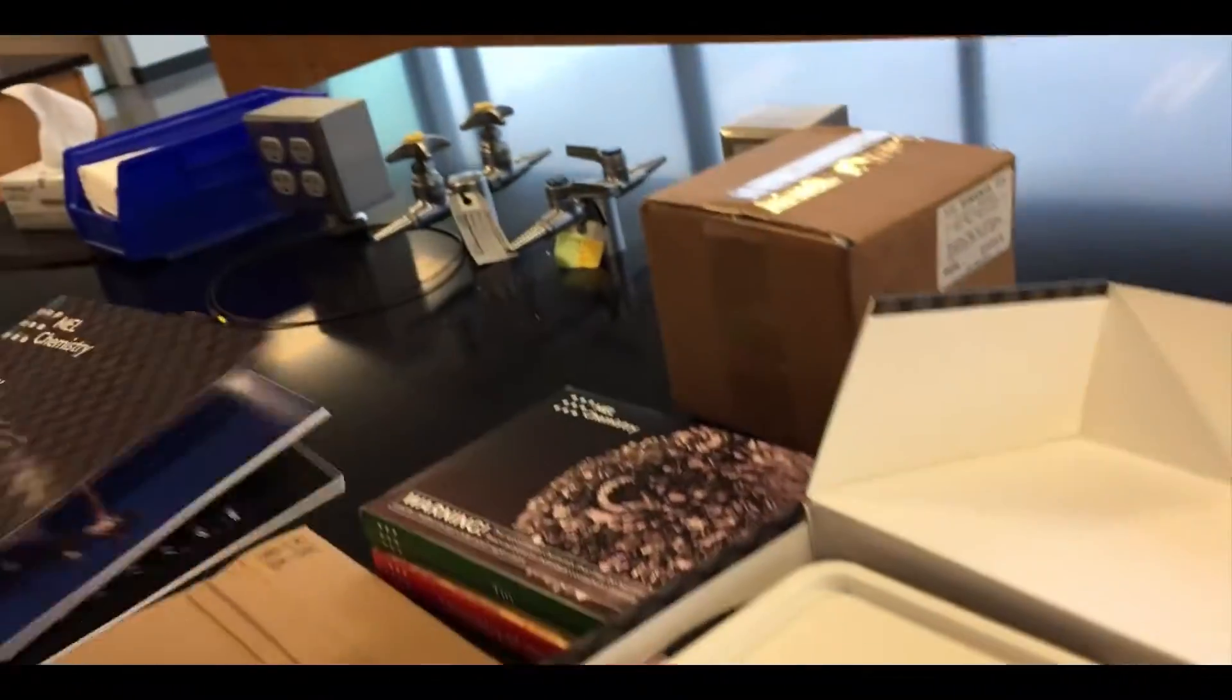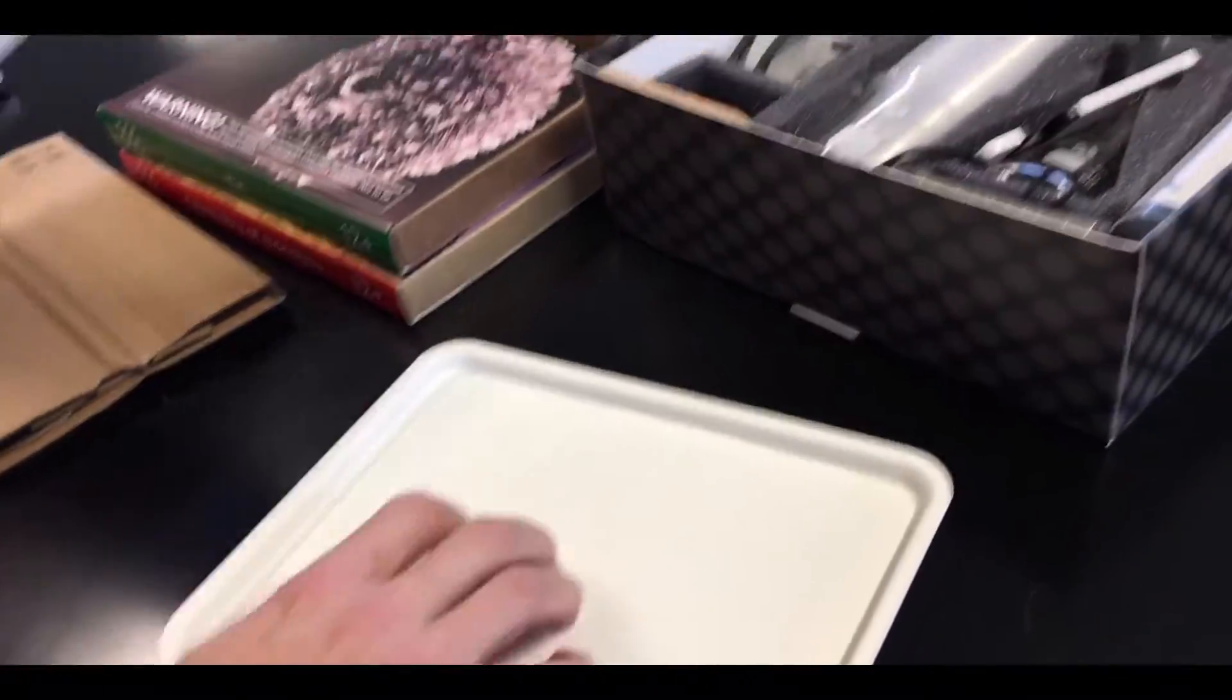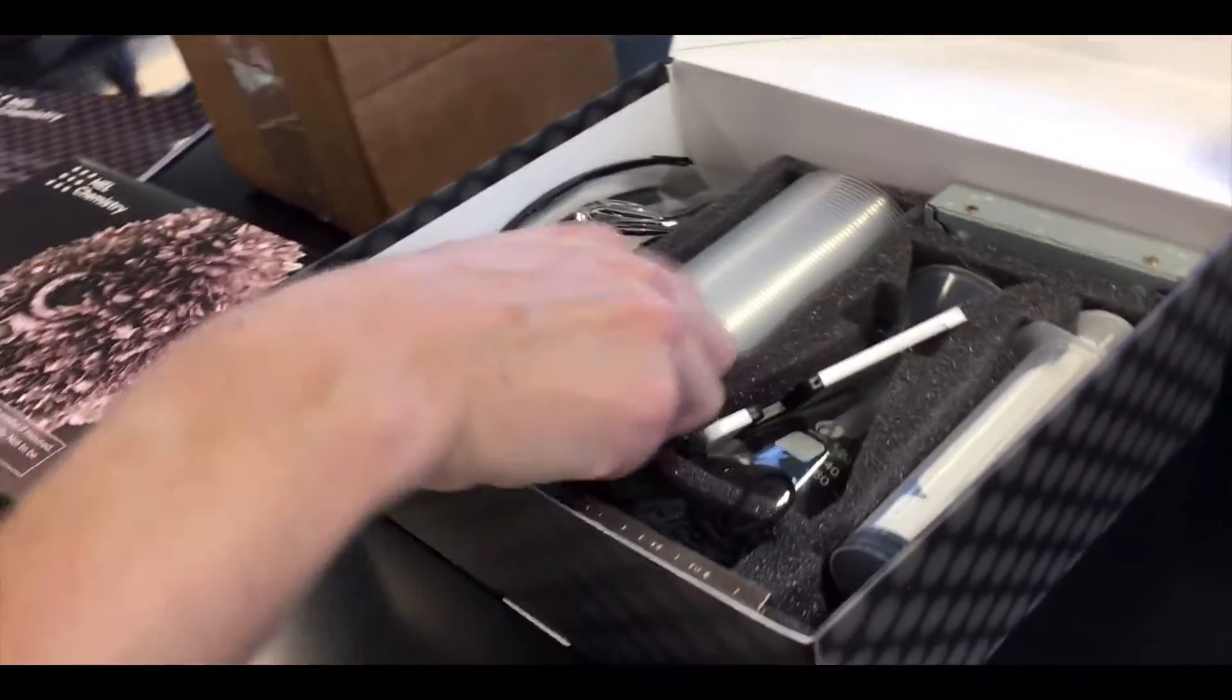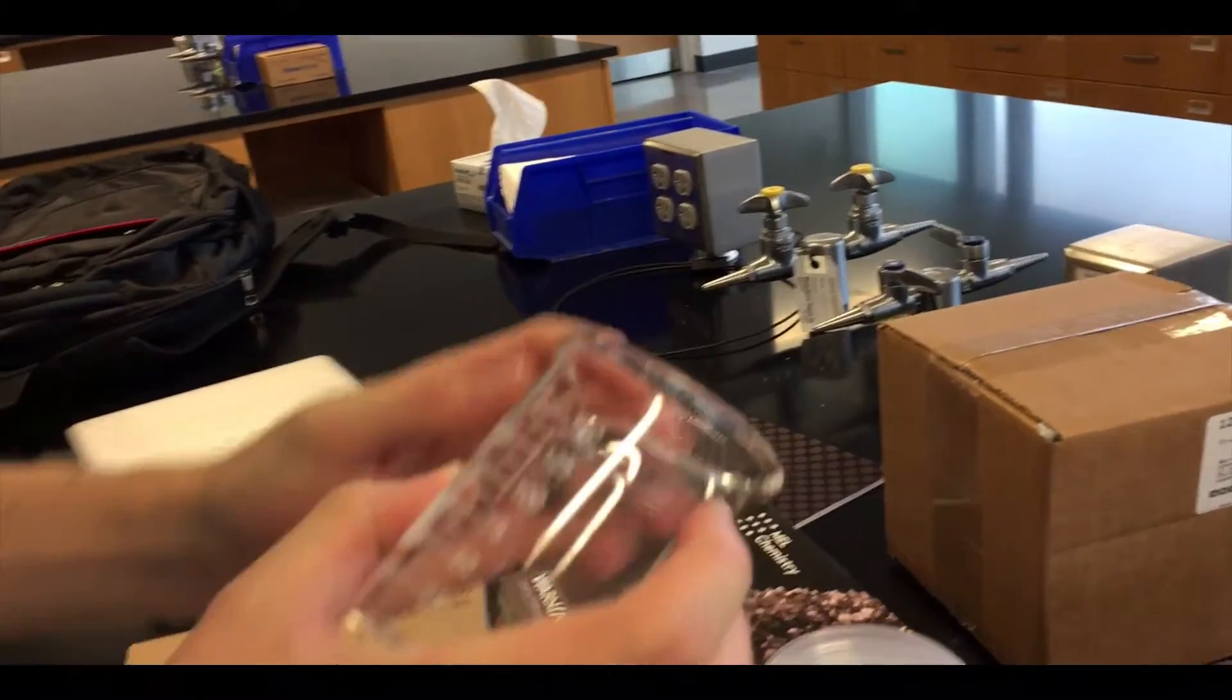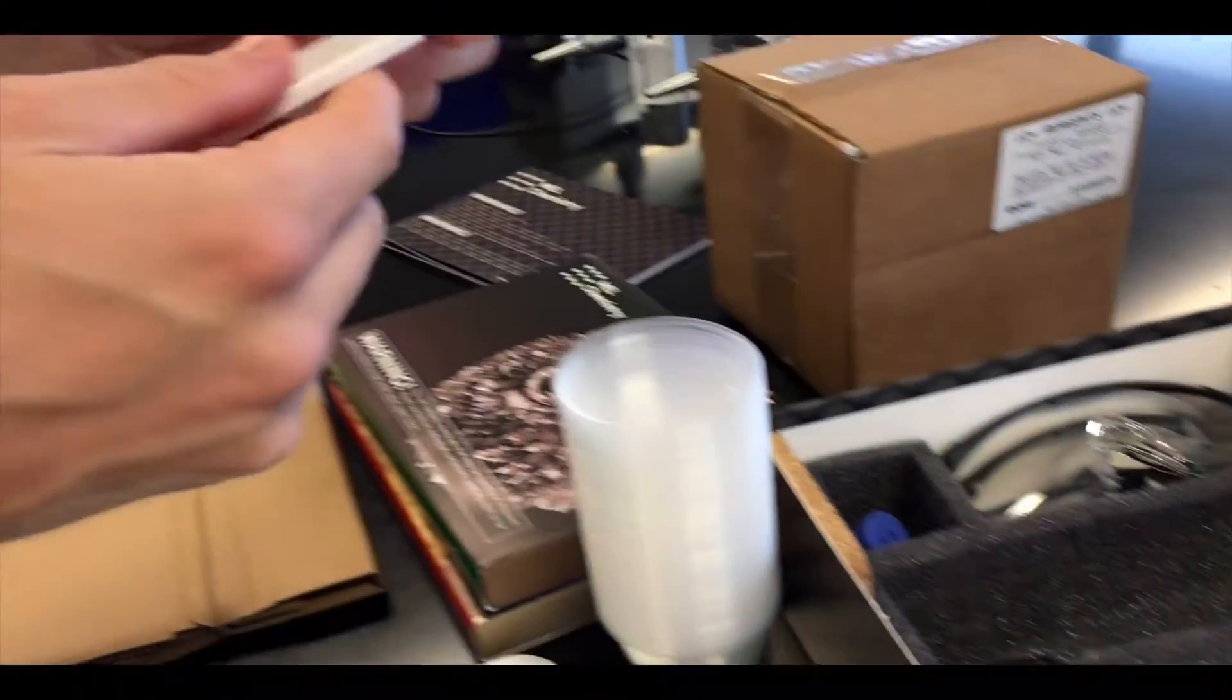Okay, nice drip tray, essential piece of equipment there. We've got plastic cups, we've got a nice beaker here. I like how they put approximate measurements on there just in case you wanted to use it for specific measurements.